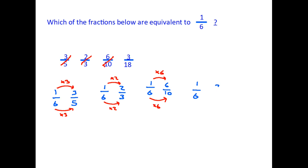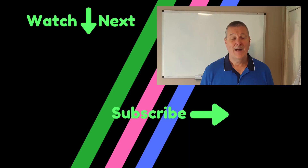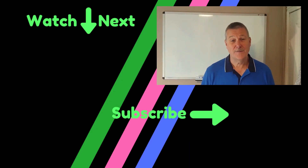We have to hope that the answer is the last fraction. It's one sixth compared to three eighteenths. The top number has gone from one to three — it has been multiplied by three — therefore we need to multiply the bottom by three: six times three is eighteen. Therefore three eighteenths is the answer. Three eighteenths is an equivalent to one sixth.